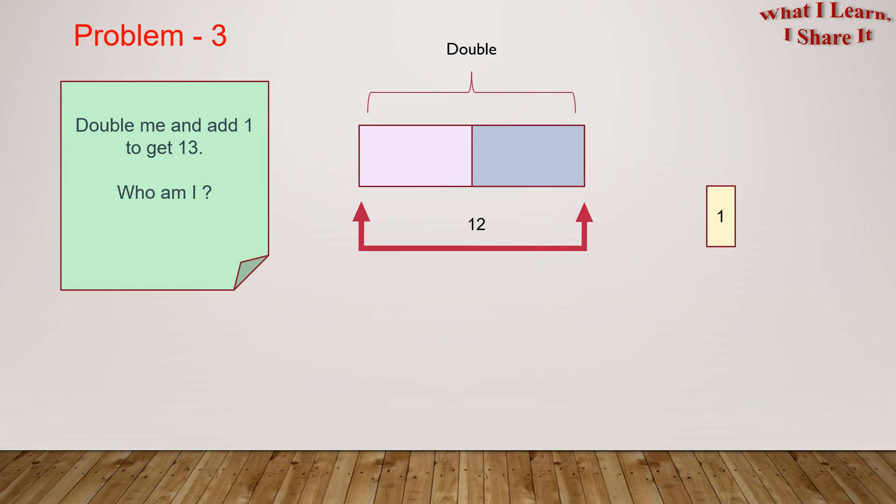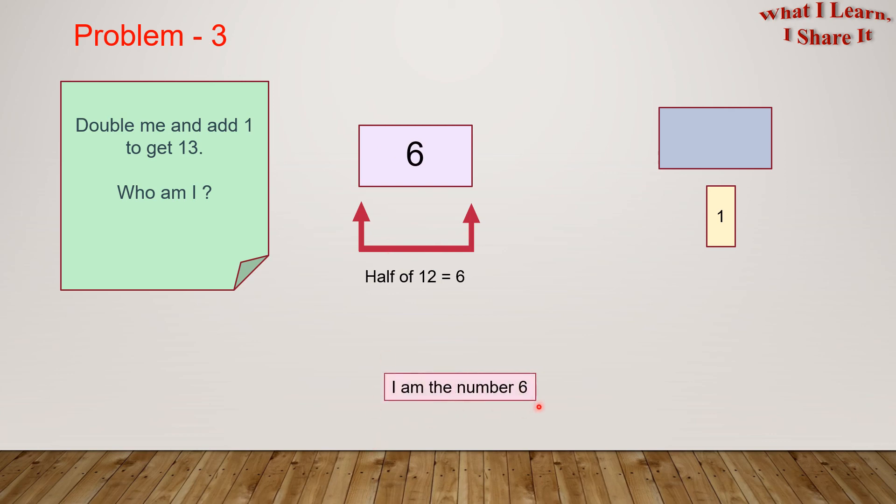Now, these 2 boxes over here are making 12. Let's remove one of these boxes. And we will get half of 12, which is 6. I am the number 6.